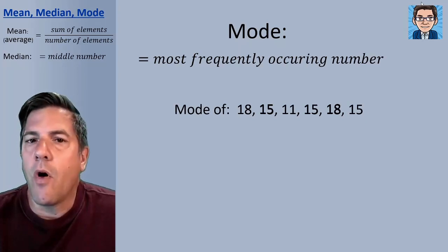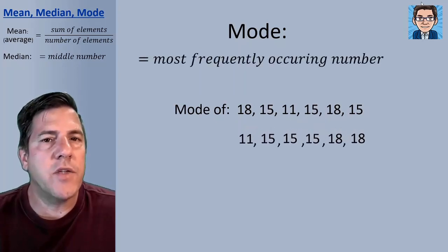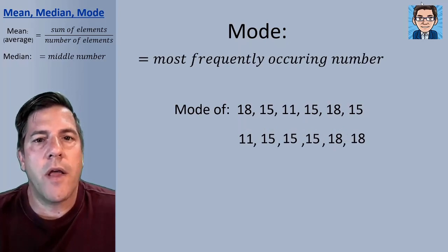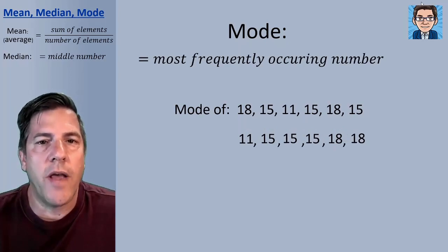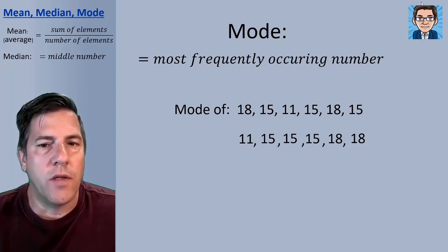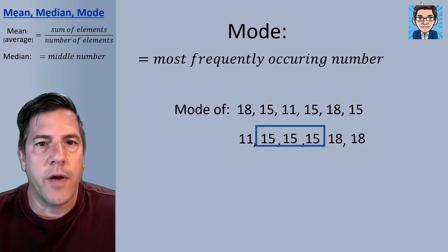When you have a very long list of numbers, it might help to put them in order. That way all the numbers are going to be next to each other. So you can take a look here and see that 15 occurs three times, 18 occurs twice, 11 occurs once. So 15 here is going to be the mode, the most frequently occurring number.